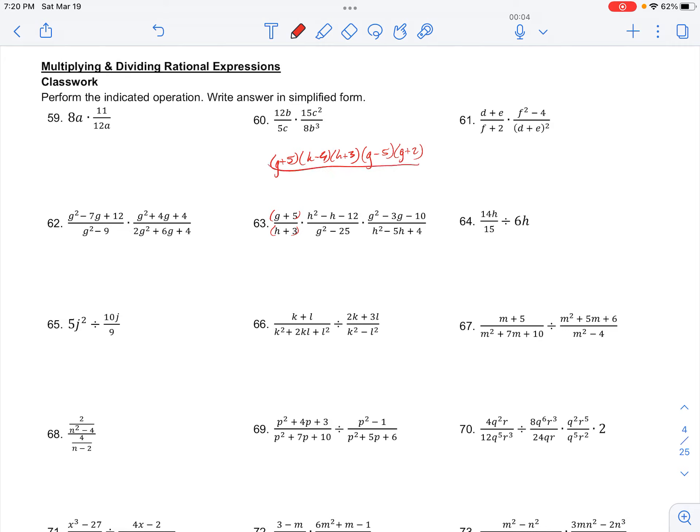And in the denominator, we have h + 3 times g² - 25. That's the difference of squares, so we can write that as (g - 5)(g + 5).